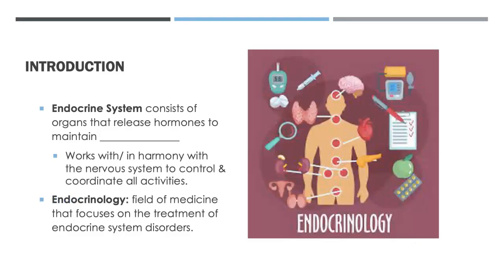Our endocrine system consists of organs that are able to release hormones in order to maintain homeostasis. Homeostasis keeps that balance set point for certain areas of our body — for instance, our body temperature, our pH level within our blood or tissues, the amount of calcium within our blood, the amount of glucose within our blood. We want it at a homeostasis level, so it works in harmony with our nervous system to coordinate all of these activities.